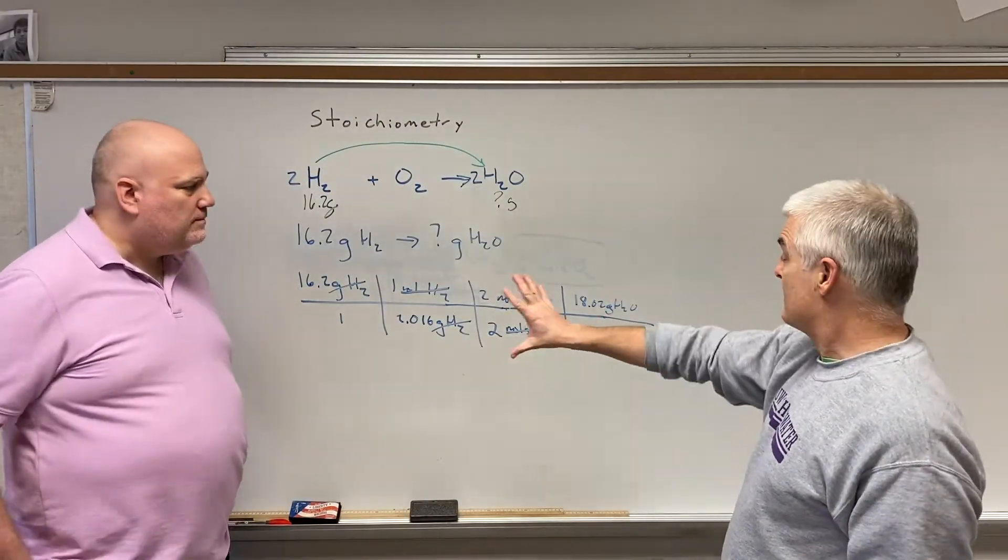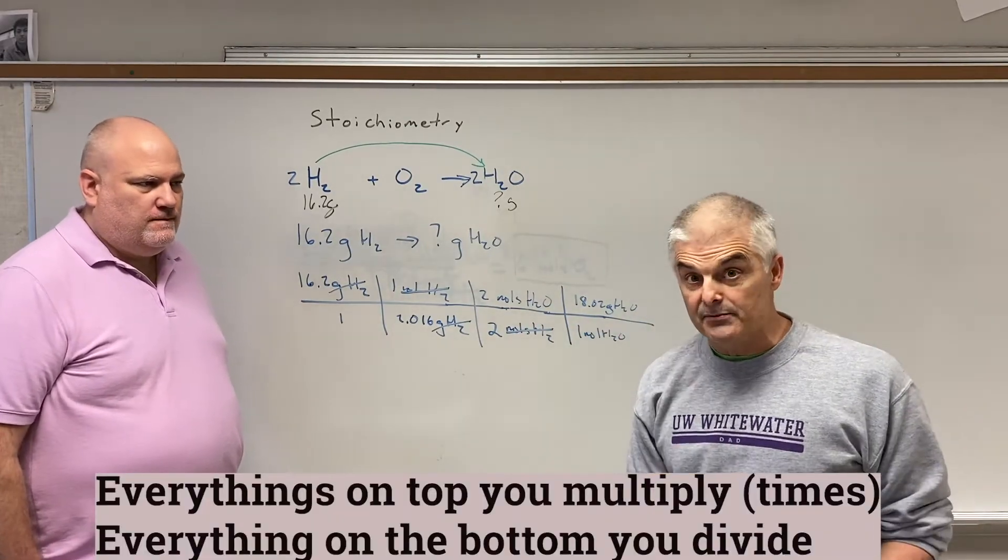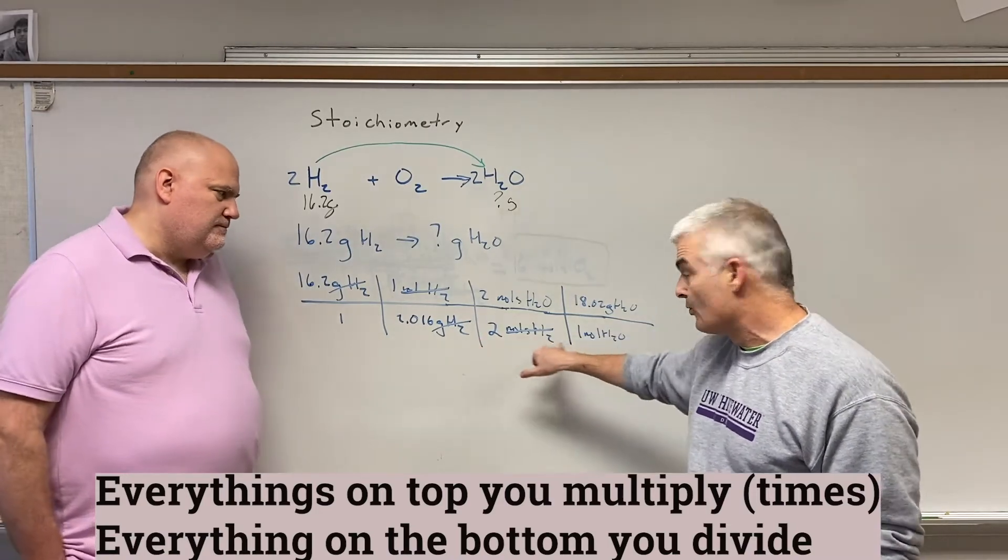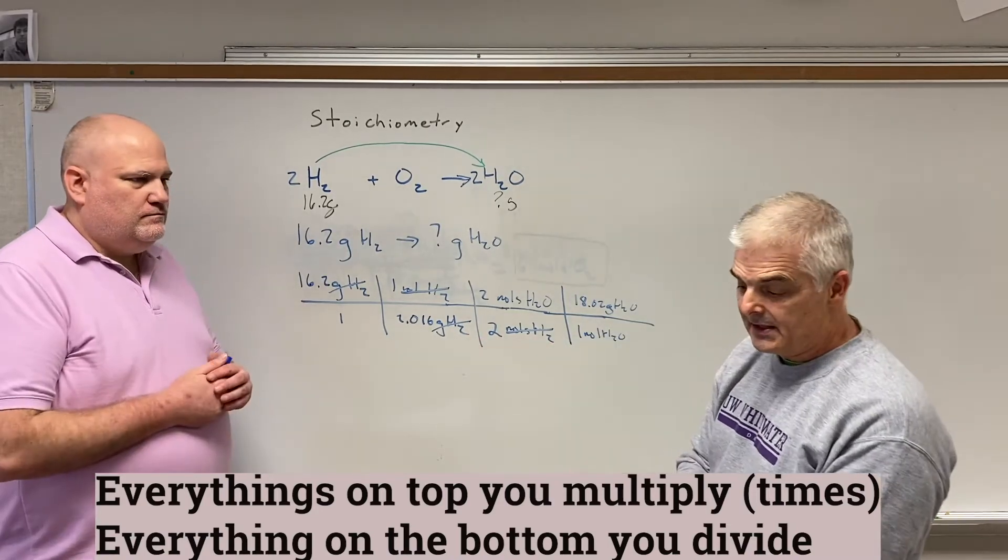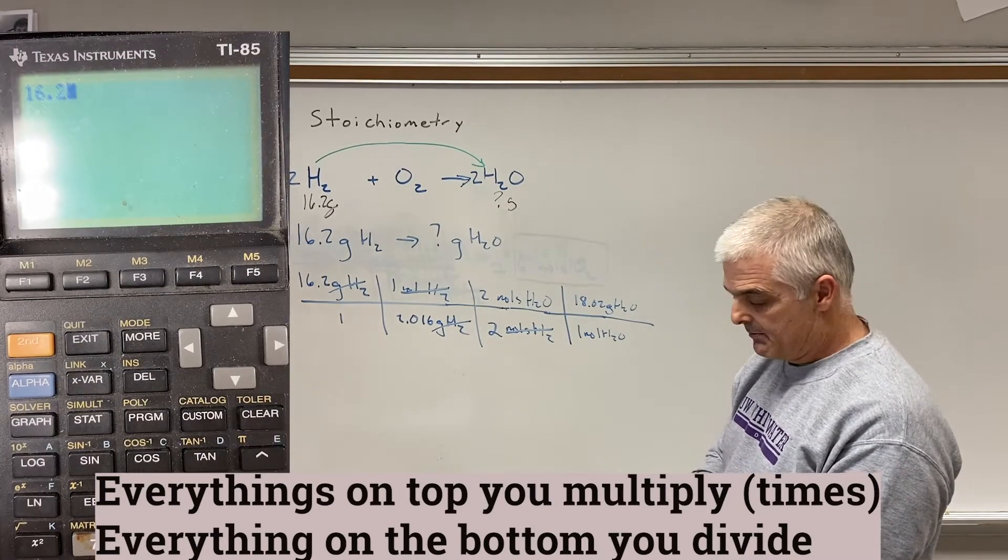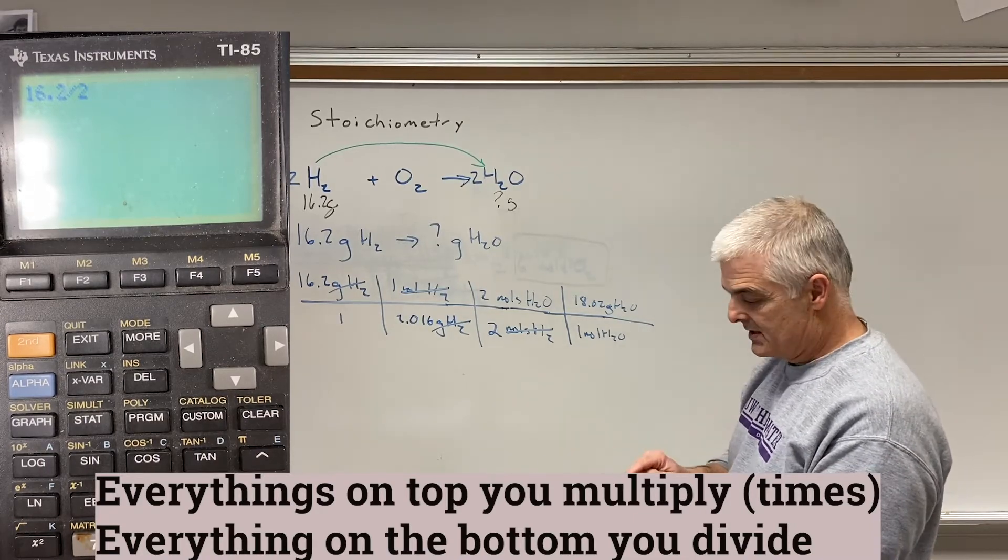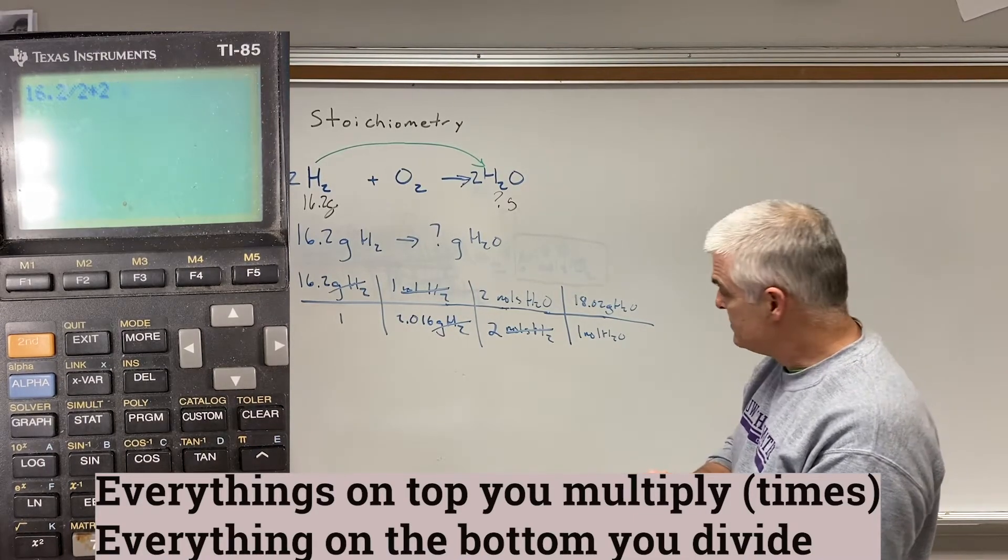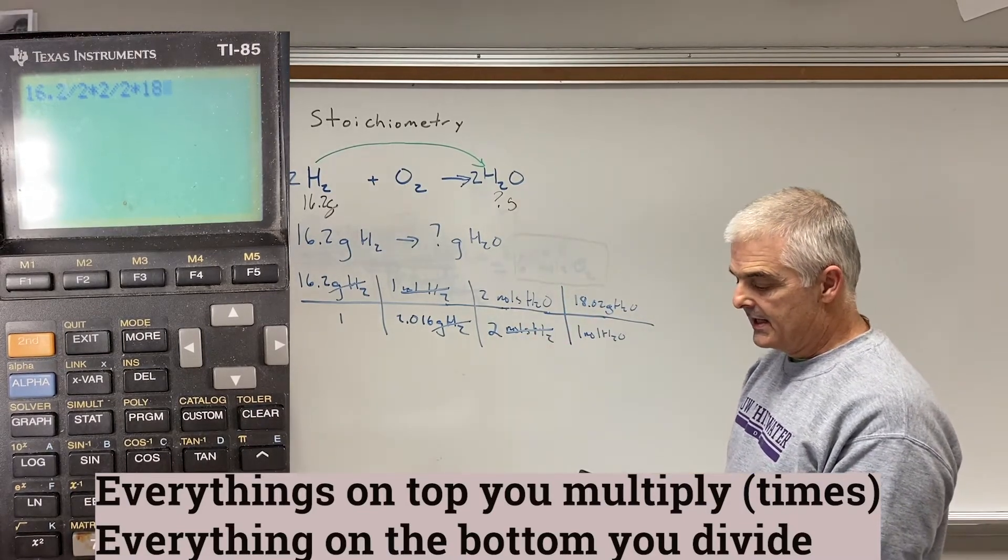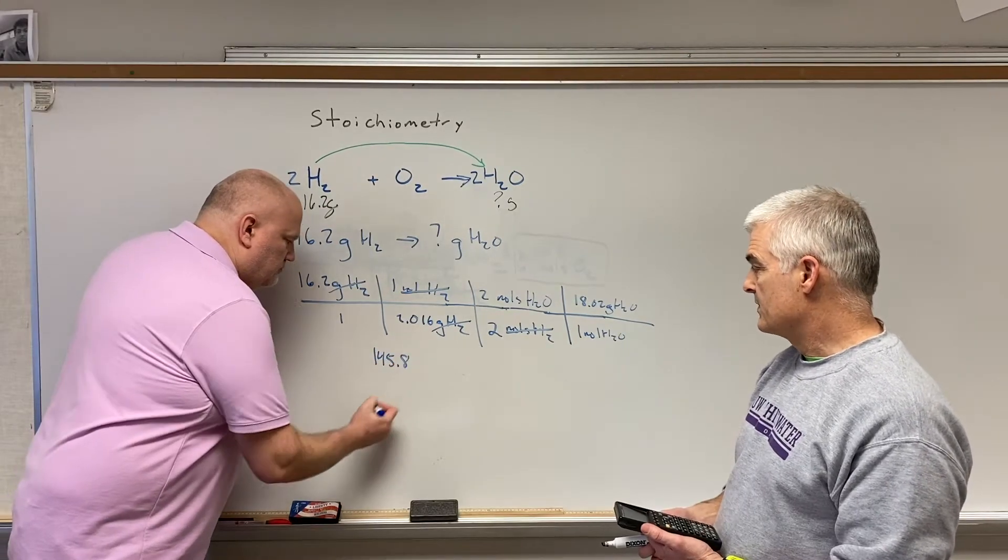Now one thing you might have forgotten, is if you've got a big set of fractions right here, here's the rule. Everything on top, you times everything on the bottom, you divide. Now notice I've got two different numbers. You can ignore the ones, because they're divided by one, same thing. So listen how I type. I'm going to say 16.2 divided by... I'm going to cheat a little bit. Divided by 2. I'm not going to type 2.016. Right. Times 2 divided by 2. Times 2 divided by 2. Times 18. And I get 145.8 grams of water.